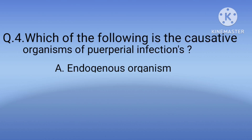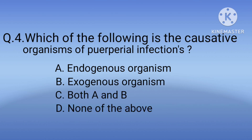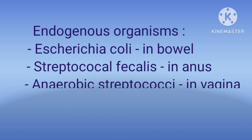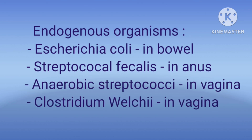Question 4: Which of the following are the causative organisms of puerperal infections? Option A: endogenous organisms, option B: exogenous organisms, option C: both A and B, option D: none of the above. The correct option is C, both A and B. Endogenous organisms are normally present in the body without causing harm — for example, Escherichia coli present in the bowel, Streptococcus faecalis present in the anus, anaerobic streptococci present in the vagina, and Clostridium welchii also present in the vagina.